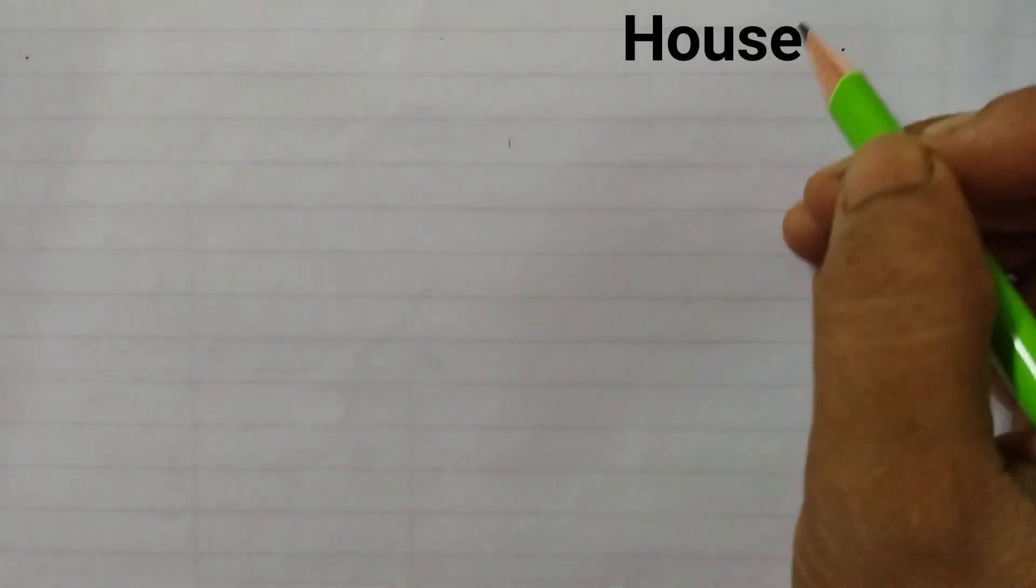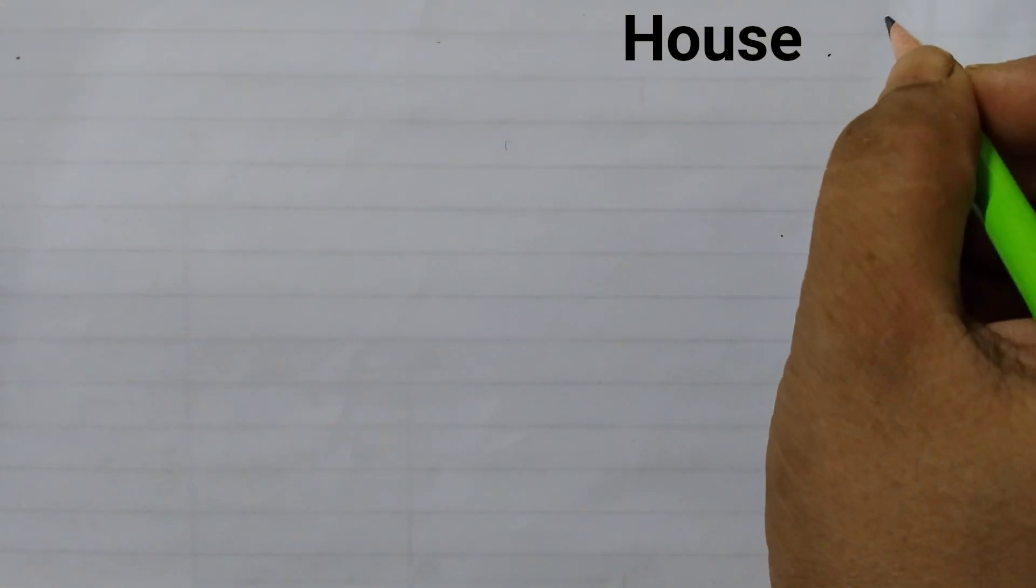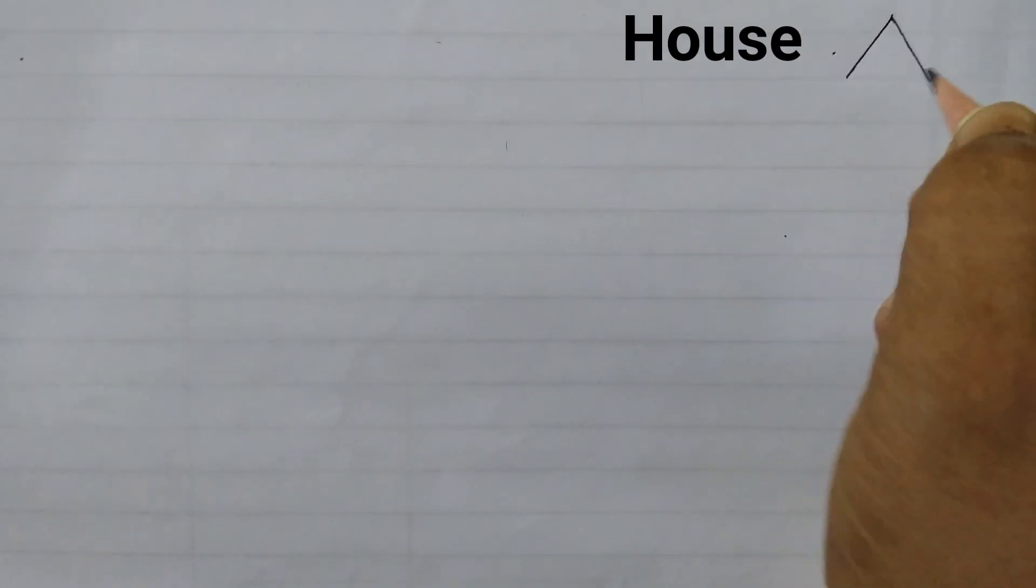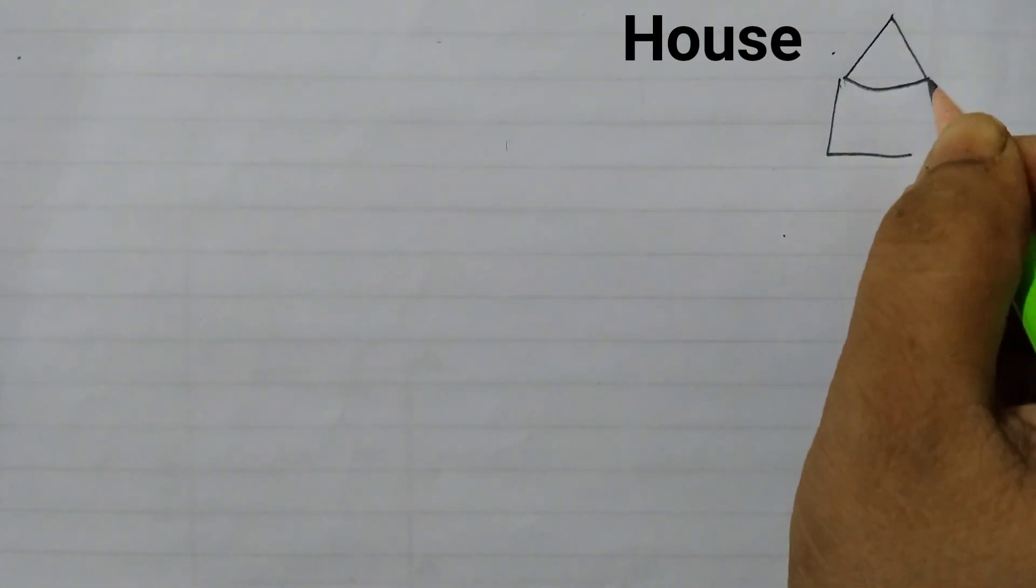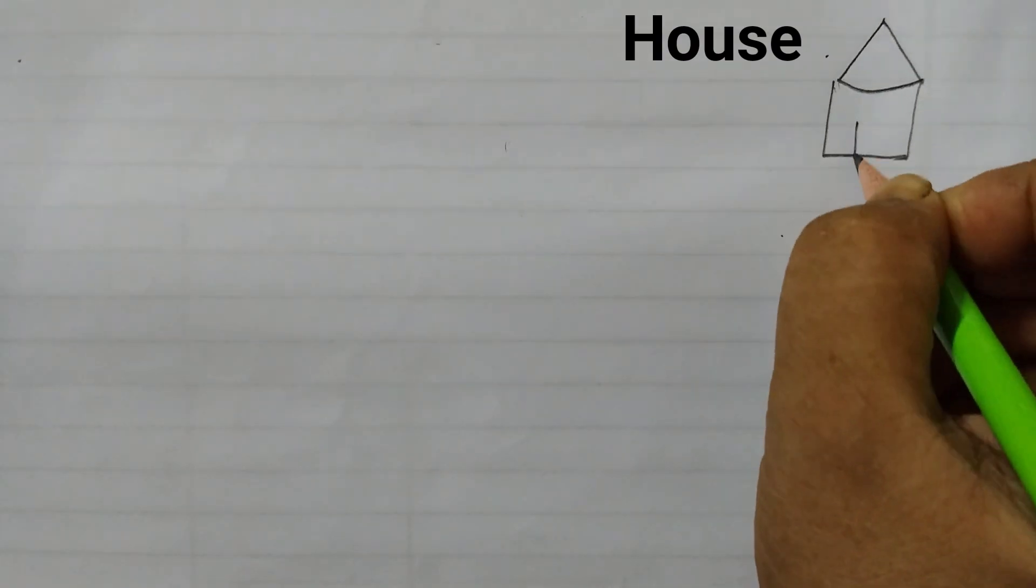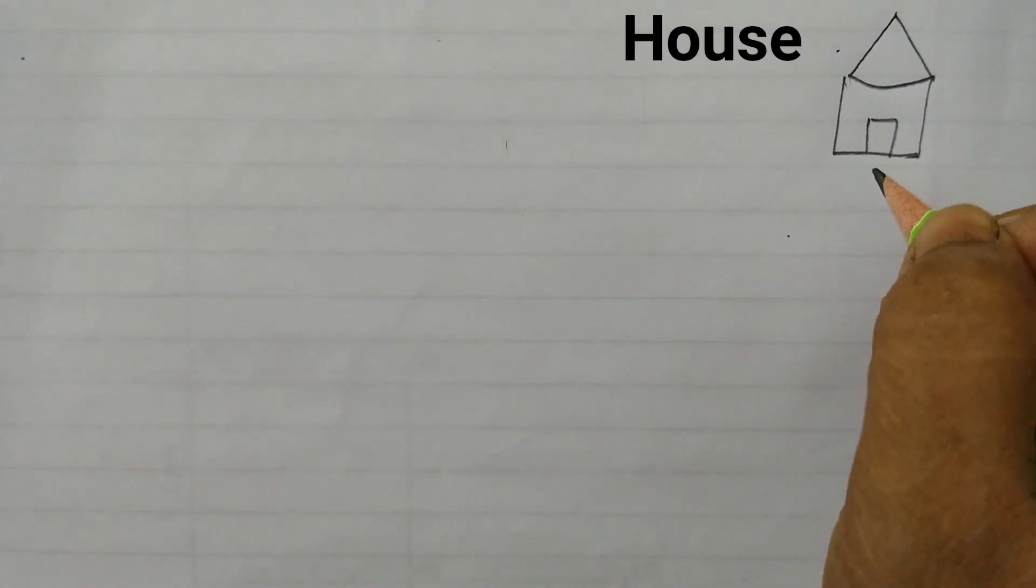So first we will draw a rough diagram of the house. It looks somewhat like this. And there is a door here.